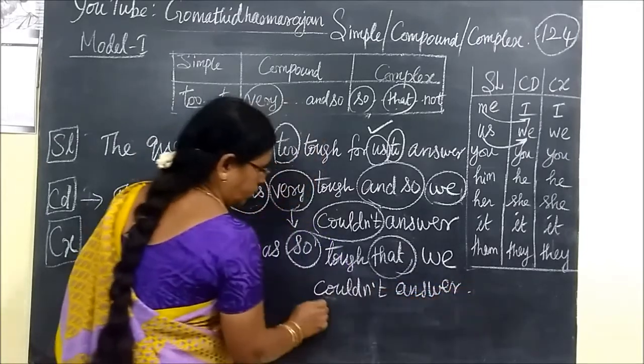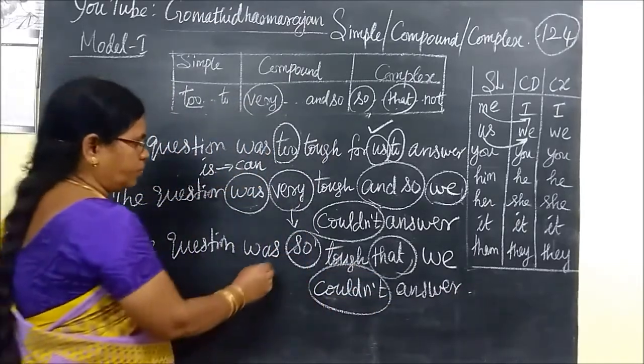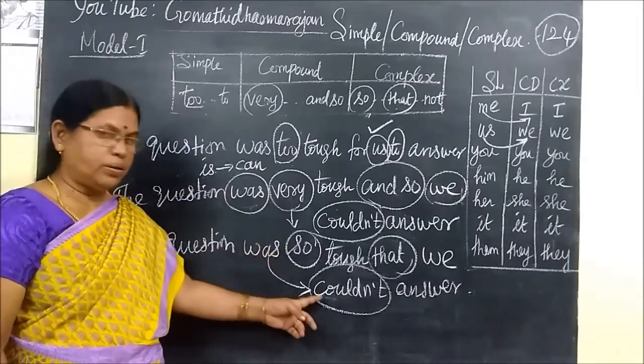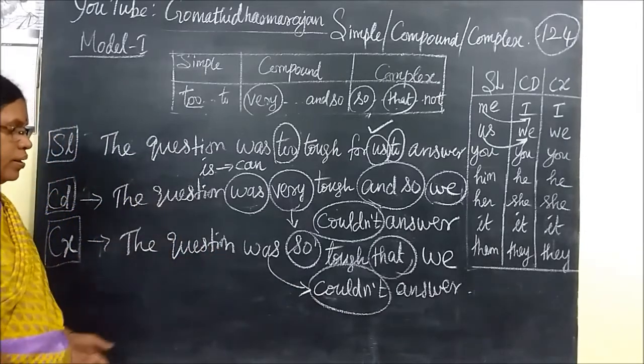That, we couldn't answer. You could answer, you could answer, you can't answer, but you can't answer, you are saying, could. Is means can, was means could. So, the question was so tough, that we couldn't answer for this.